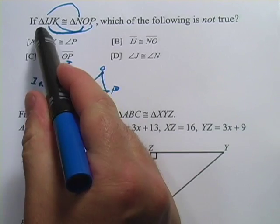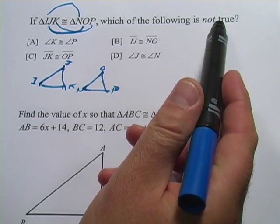So let's take a look. It says if these two triangles are congruent, which of the following is not true?